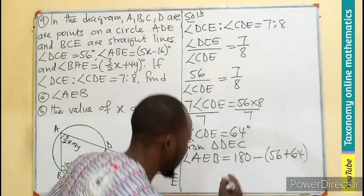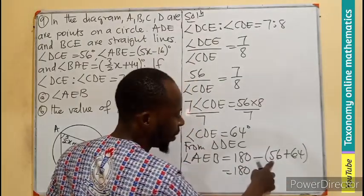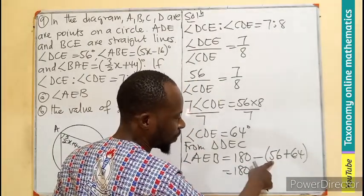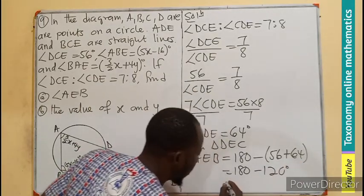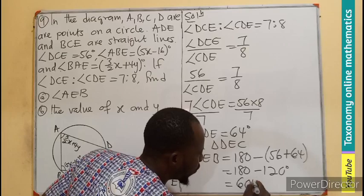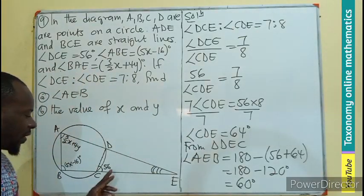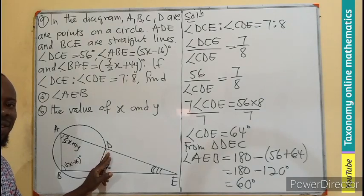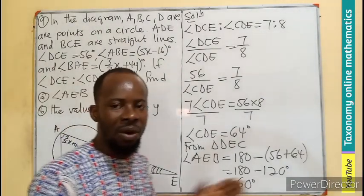So what do I get here? 180, this will be 110, so 120. So the angle we are looking for will be 60 degrees. So we have found the first part of the question.